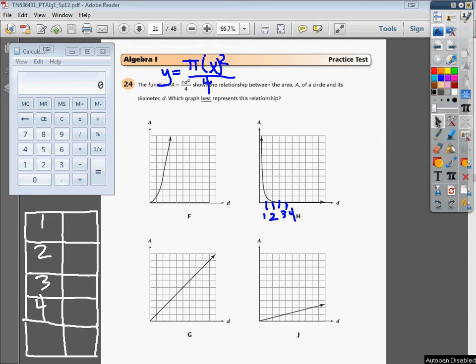So the first thing that I'm going to do, or the next thing I should say, is I'm going to plug 1 in for my X. So when I do that, I'm going to count pi as 3.14.